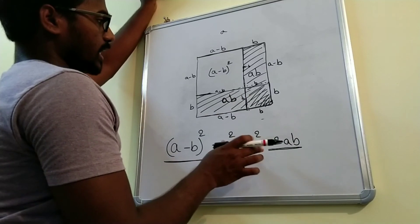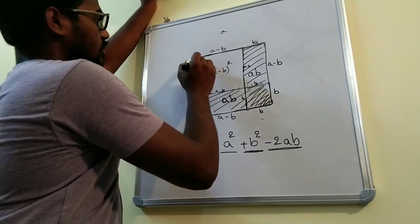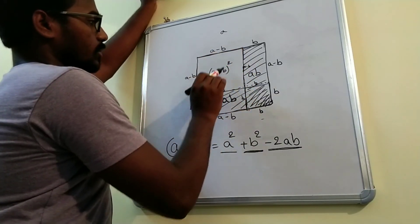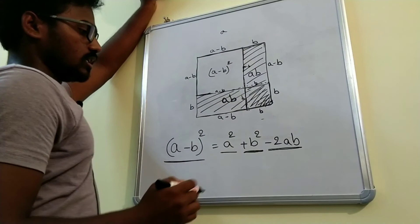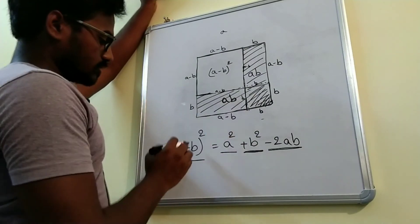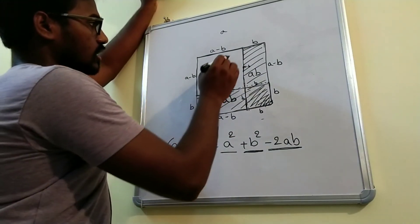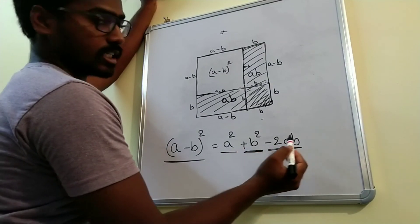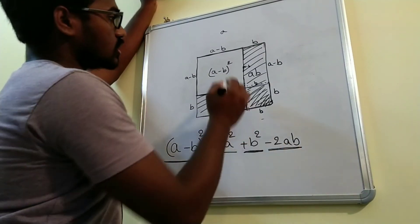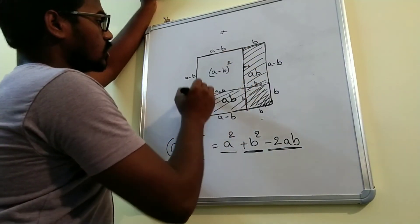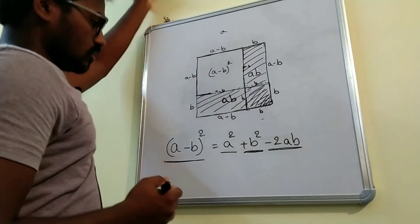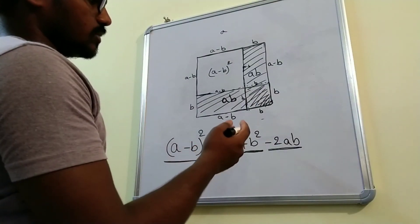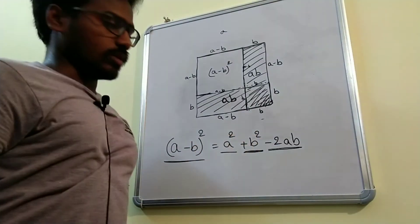So what is the remaining area? That is this box. This box is equal to a minus b whole square. Hence, a minus b whole square is equal to this area, and a square plus b square minus 2ab is also equal to this area. Hence, the formula is proven: a minus b whole square equals a square plus b square minus 2ab.